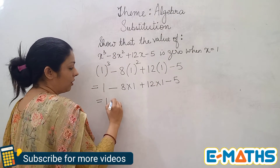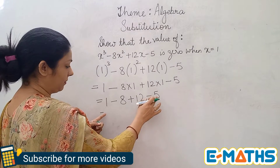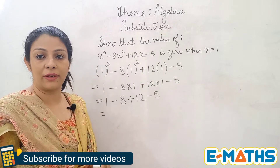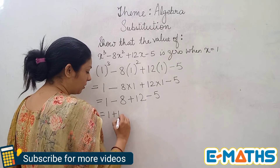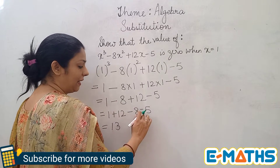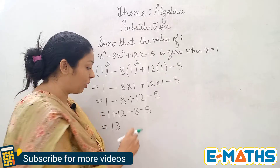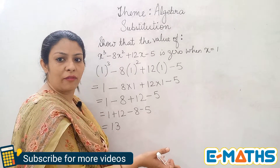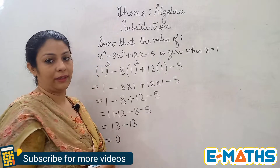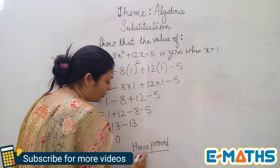That gives us 1 minus 8 plus 12 minus 5. I have two negative integers and two positive integers. As I mentioned, it's easier to group the positive ones and the negative ones together. So I'll write the positive ones together: 1 plus 12, minus 8 and minus 5. 1 plus 12 is 13. Minus 8 and minus 5 — minus and minus is plus, so we add them, but we write the sign of the bigger number. Both numbers are negative, so we put a minus, and minus 8 plus minus 5 is minus 13. Therefore 13 minus 13 equals 0 — hence verified, hence proved. Whenever you are proving any question, it is important to write 'hence proved' at the end.